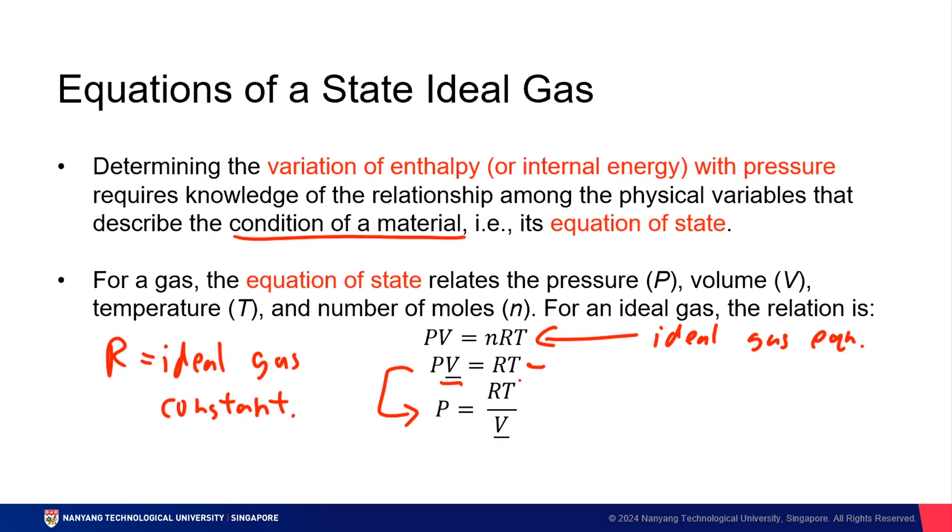Hence, if we were able to get a value for T and volume, temperature and volume, multiplied by the ideal gas constant, we will be able to figure out what exactly is the pressure of the ideal gas. And that's really what an equation of state is, something that describes the condition of a material.